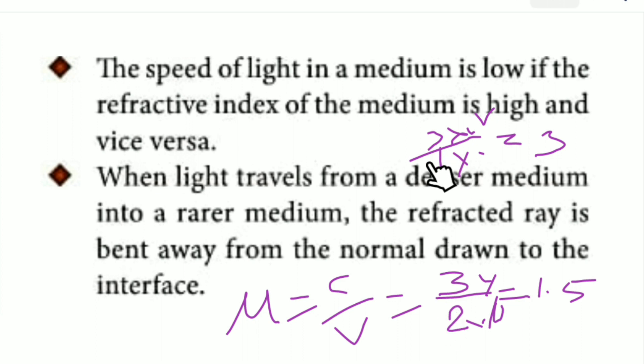If the speed of light in the medium is slow, then the refractive index is high. If you compare, when the speed is slow, the refractive index is high because it's a reciprocal relationship. The numerator and denominator are inversely related. When the speed of light is high, the refractive index of the medium is low. If the refractive index of the medium is high, the speed is low.